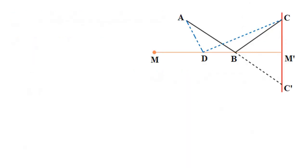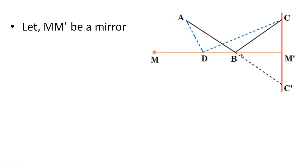Let us discuss the principle of shortest path using the concept of reflection. Let MM' be a mirror. Light travels from point A, reflects at point B on the mirror, and reaches point C. We extend the path to get path BC'. From the diagram, BC is equal to BC'.